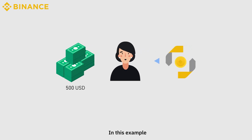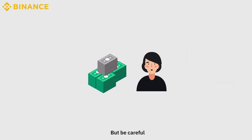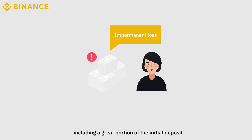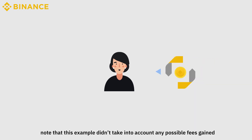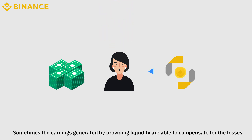In this example, Alice ended up losing on potential profits, so the impermanent loss wasn't that significant. But be careful — impermanent loss can lead to big losses, including a great portion of the initial deposit. Note that this example didn't take into account any possible fees gained. Sometimes the earnings generated by providing liquidity are able to compensate for the losses.